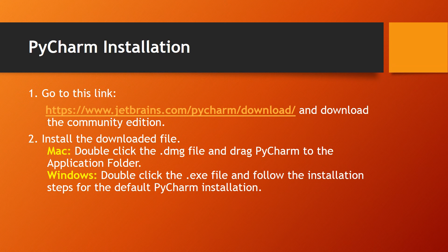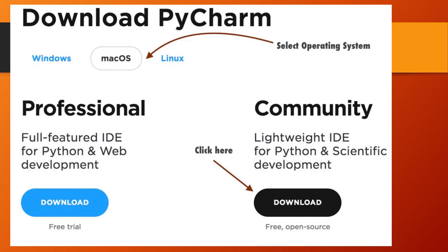For PyCharm installation, go to the PyCharm link and download the Community edition. Install the downloaded file. For Mac, double-click the .dmg file and drag PyCharm to the Applications folder. For Windows, run the installer file and follow the default installation steps to download and set up PyCharm.